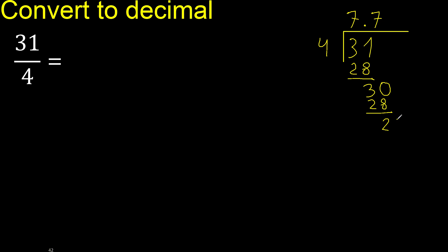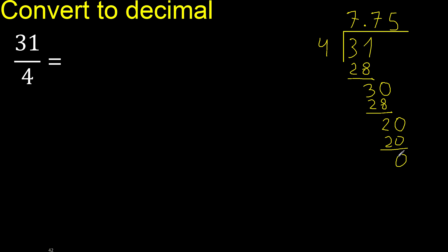There is no number, therefore complete with 0. Point is here. 20. 4 multiplied by 5 is 20. 20 minus 20 is 0. Finish.